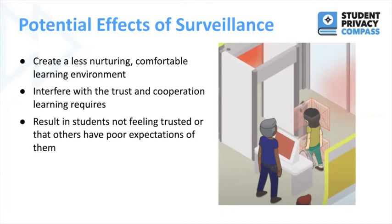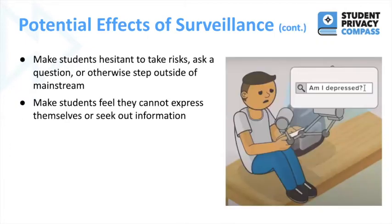This is especially because surveillance in many contexts is focused on monitoring suspicious groups. Another potential effect of surveillance is that students may become hesitant to take risks, ask a question, or otherwise step outside of the mainstream. When students learn, they inevitably make mistakes, but under this effect they may be more conscious of looking 'stupid,' being made fun of, or otherwise standing out. Another potential surveillance effect is that students may feel they cannot fully express themselves or seek out information, like reaching out to a counselor.